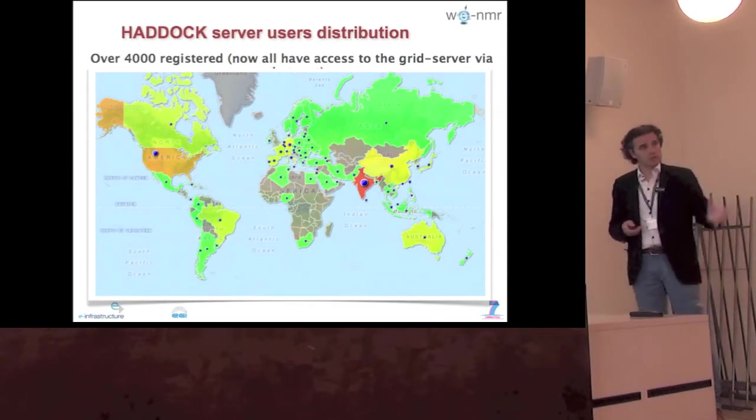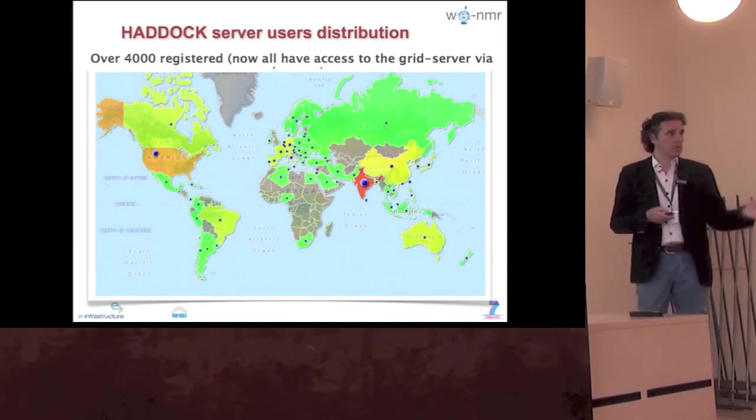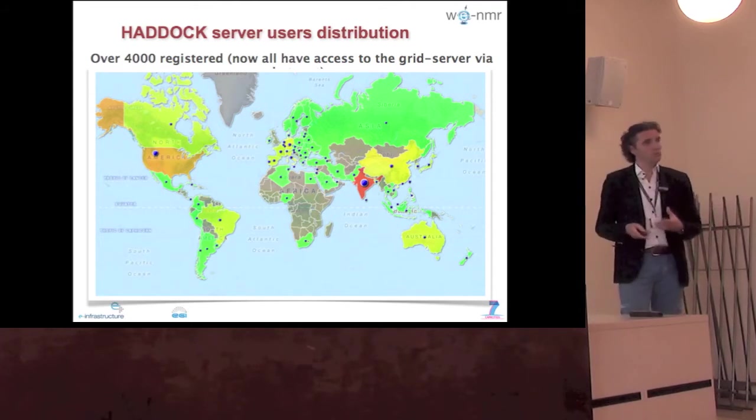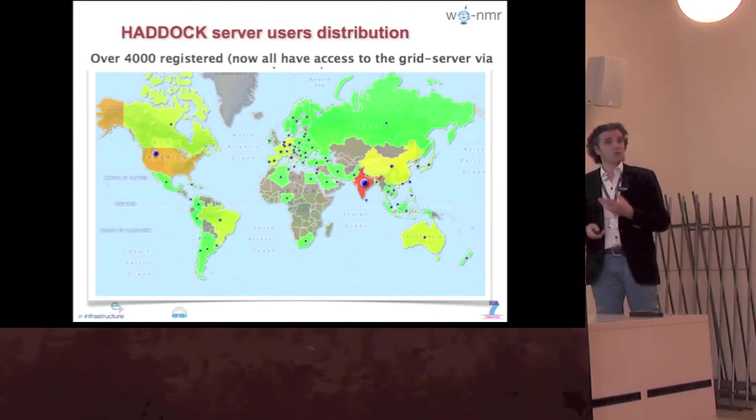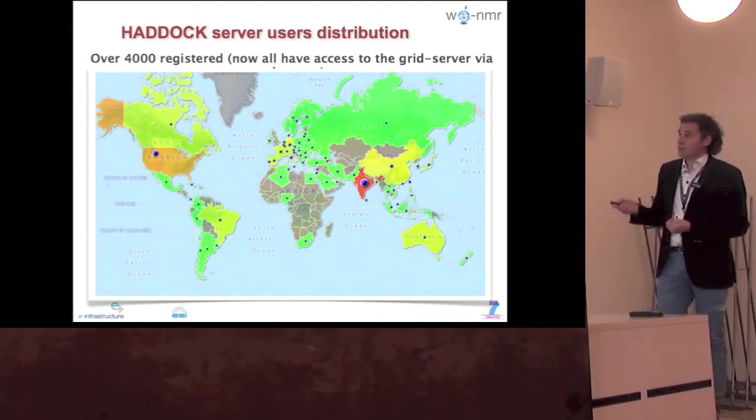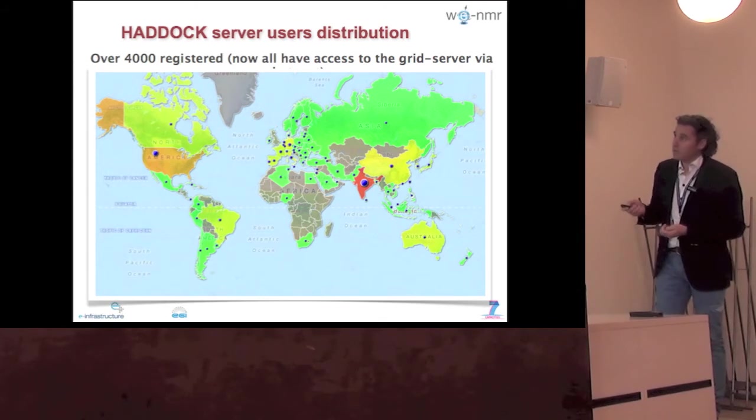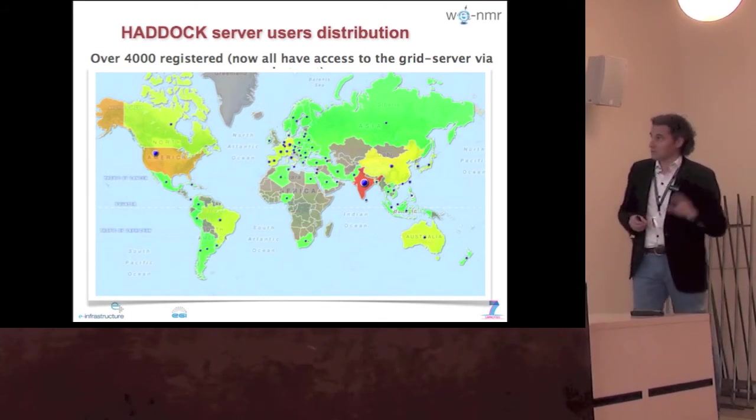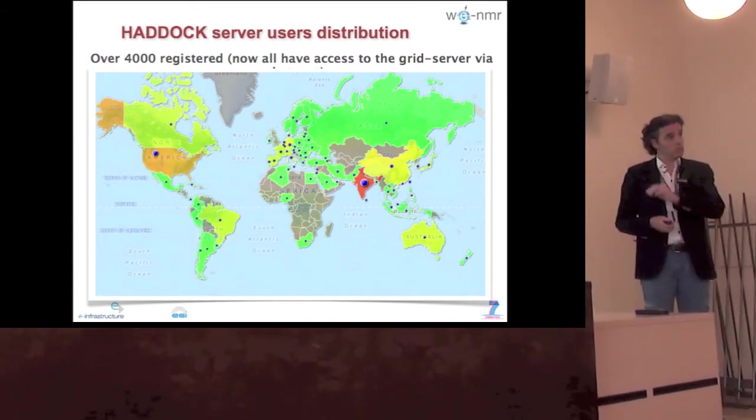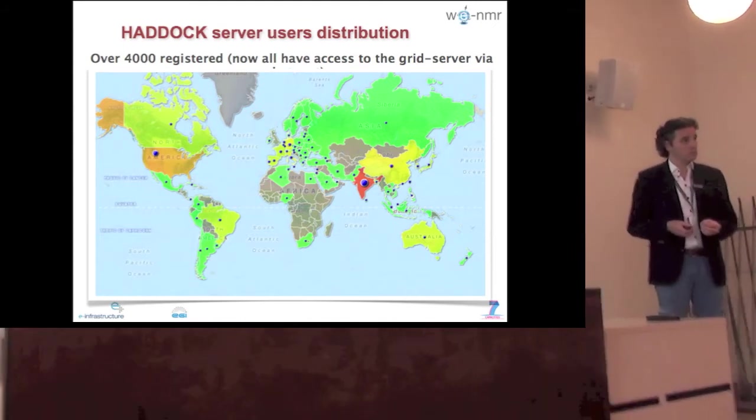I showed you a map of the VRC users of WNMR - 1200 people registered. This is a map of the HADOC users, the users of the web portal of HADOC. This is over 4000 users. Again the distribution - you see India popping up and the US, but all over the place. We actually cover a bit more countries than the VRC.